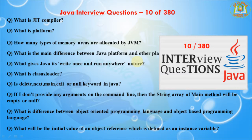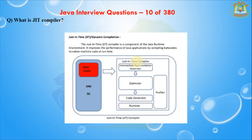Now I am going to discuss about what is the JIT compiler. JIT means Just-In-Time. The Just-In-Time compiler is also called a dynamic compiler. It is a component of the Java runtime environment. It improves the performance of a Java application by compiling the bytecode to native machine code at runtime. If you see this diagram, this is the architecture of a JIT compiler.